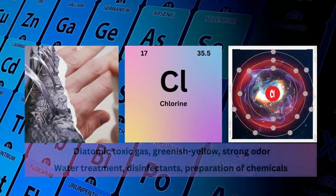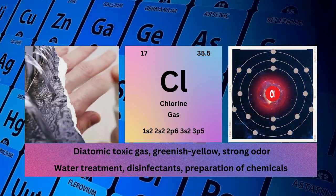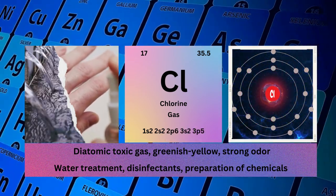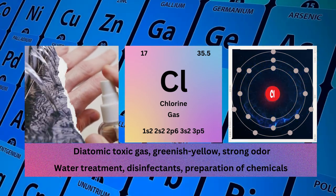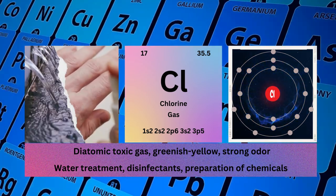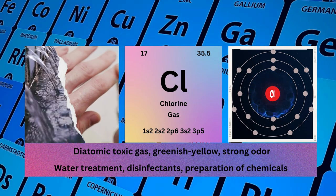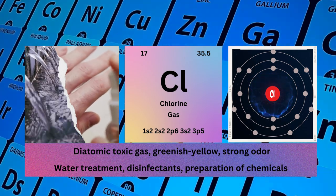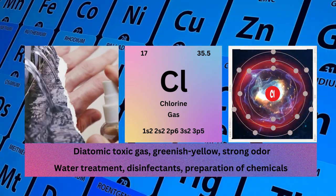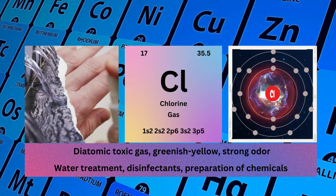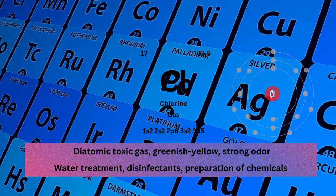Chlorine, atomic number 17, mass number 35.5, symbol Cl, state gas, electronic configuration 1s²2s²2p⁶3s²3p⁵. Physical properties: diatomic, toxic gas, greenish-yellow, strong odor. Chlorine used in water treatment, disinfectants, and preparation of chemicals.